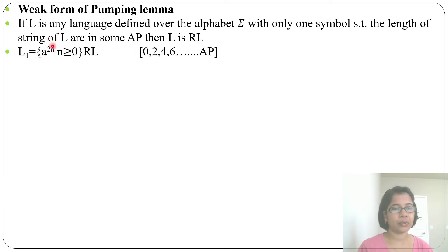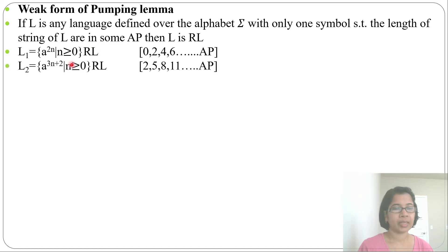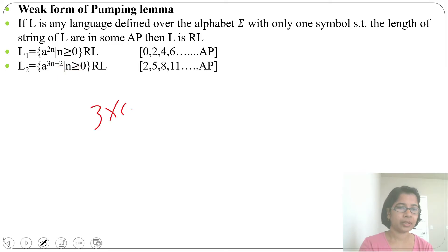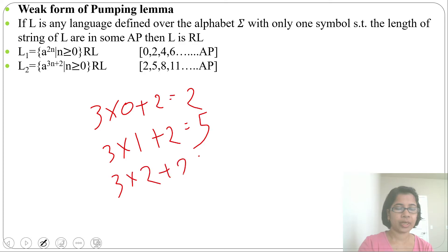First, L = {a^(2n) | n ≥ 0}. The number of a's can be 0, 2, 4, 6, 8, ... — this sequence is an AP, so this is a regular language. Next, L = {a^(3n+2) | n ≥ 0}: 3×0+2=2, 3×1+2=5, 3×2+2=8, then 11, ... The sequence 2, 5, 8, 11, ... is also an AP, so this is also a regular language.